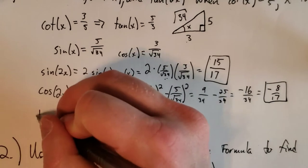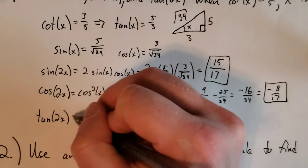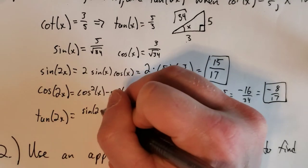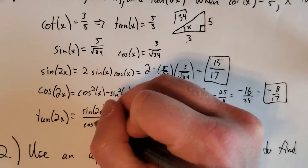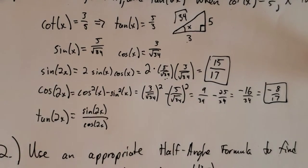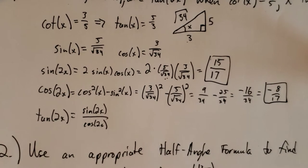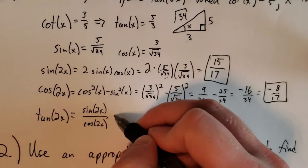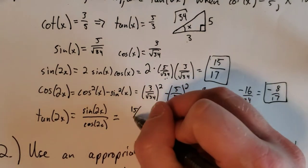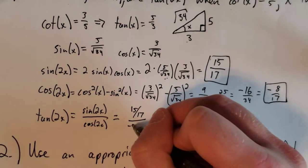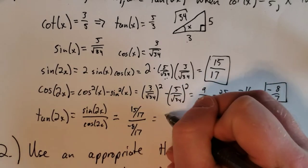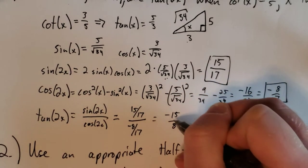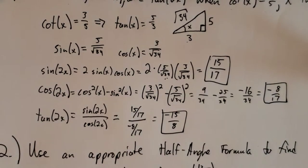And finally, tangent of 2x is just sine of 2x over cosine of 2x. That's not a formula that appears in this section, that's just the definition of tangent, right? Tangent is sine over cosine. We calculated sine of 2x in the first part and cosine of 2x in the second one. So this is 15 seventeenths over negative 8 seventeenths. This reduces to negative 15 over 8. And that is it for problem number one.